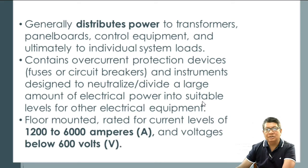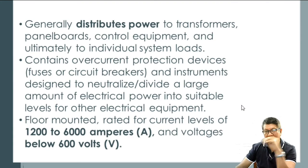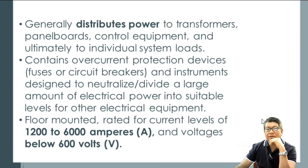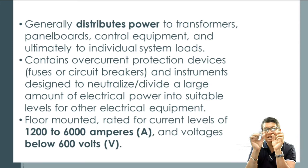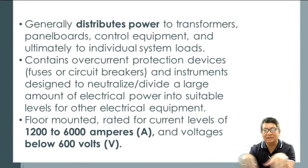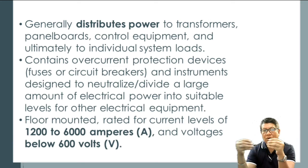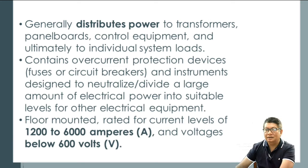Inside this cabinet — the switchboard or panel board — all the distribution to the load side is done. The wiring inside the building goes underground through the walls or up to the ceiling. The switchboard is floor mounted and rated for high current levels, so that the distribution inside the building is clean and organized.